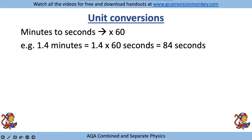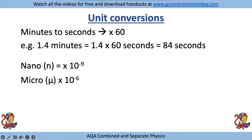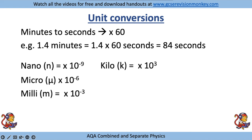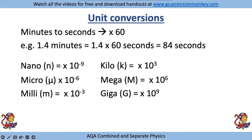Some more difficult unit prefixes: nano (n) means times 10 to the minus 9, micro means times 10 to the minus 6, milli means times 10 to the minus 3, kilo means times 10 to the 3, mega means times 10 to the 6, and giga means times 10 to the 9.